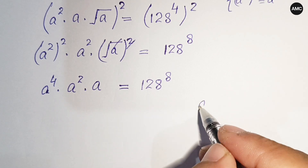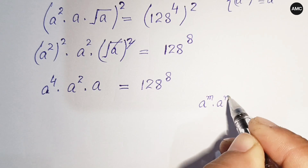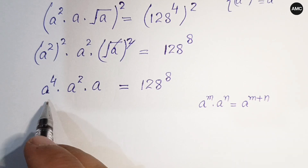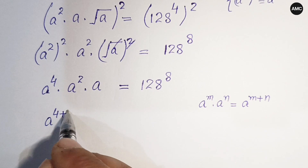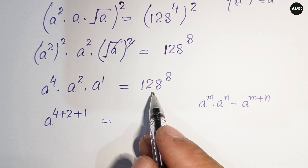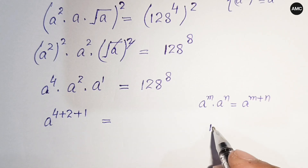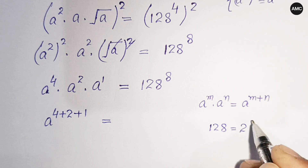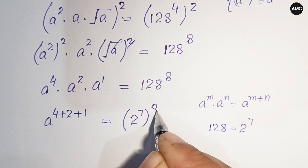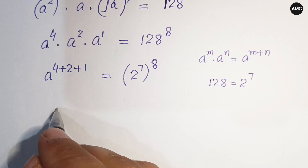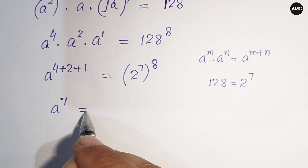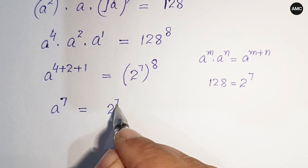Using the exponential property a^m times a^n equals a^(m+n), we get a to the power (4 + 2 + 1) equals 128 to the power 8. Since 128 equals 2 to the power 7, we substitute: a to the power 7 equals (2^7) to the power 8.